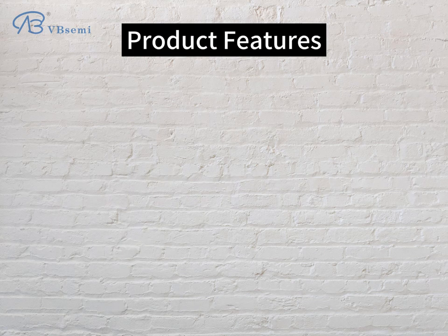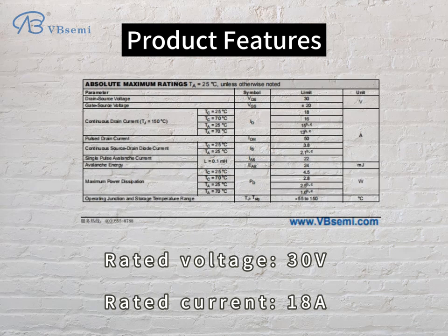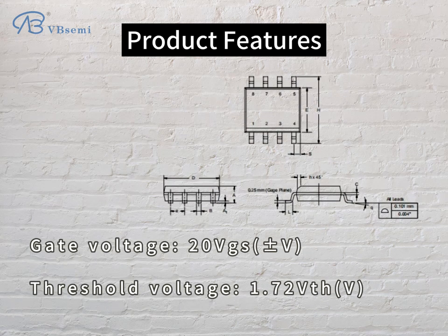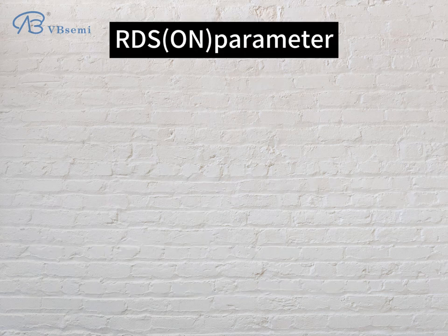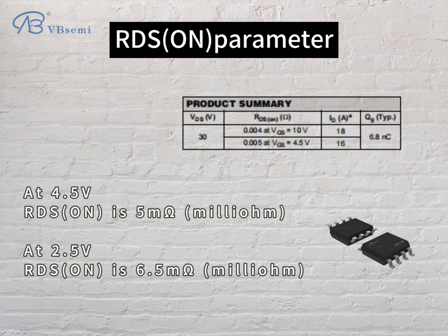Product features: rated voltage 30V, rated current 18A, gate voltage 20V (VGSV), threshold voltage 1.72V. RDS-ON parameter: at 4.5V, RDS-ON is 5mΩ; at 2.5V, RDS-ON is 6.5mΩ.